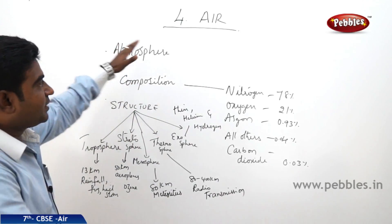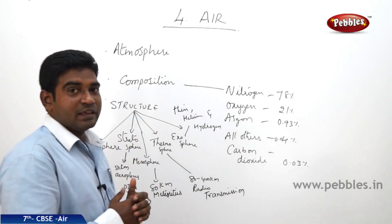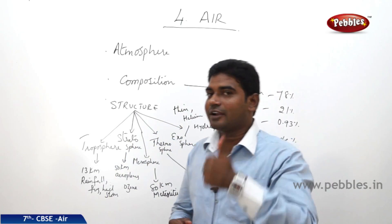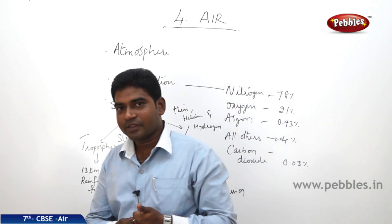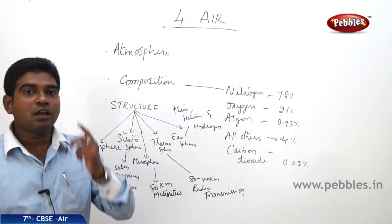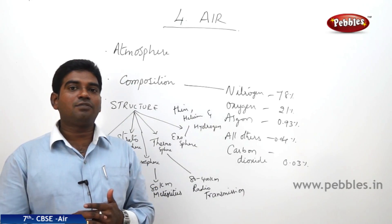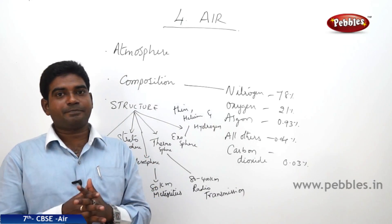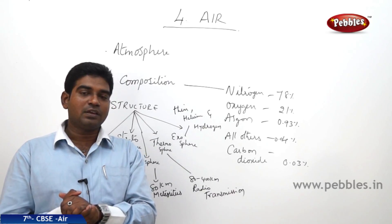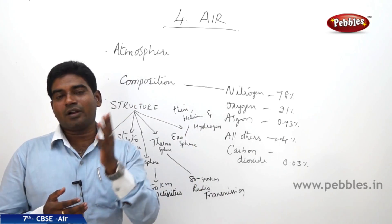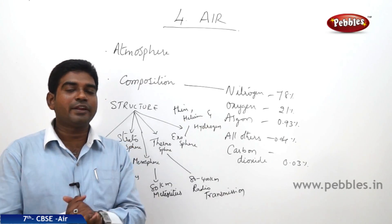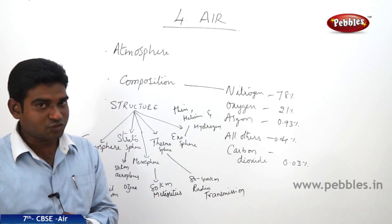Chapter 4: Air. In this chapter, we will be discussing what is atmosphere, what are the different layers in the atmosphere, what is the composition of air and how does wind travel, what is temperature, and what are the different types of wind patterns.